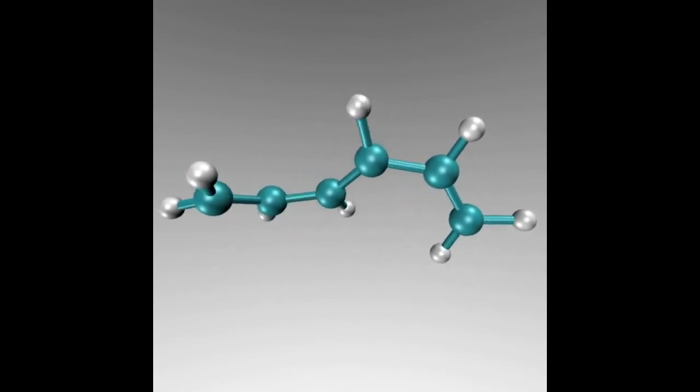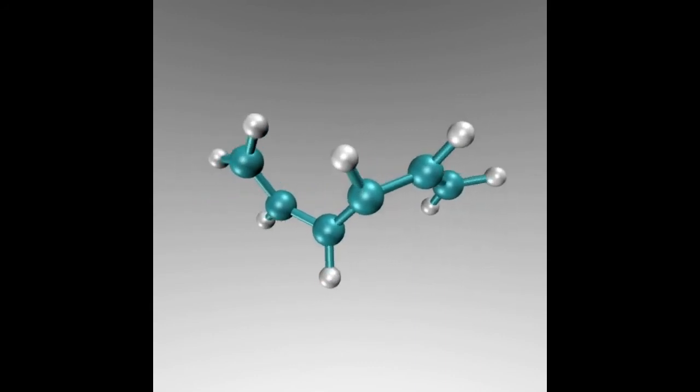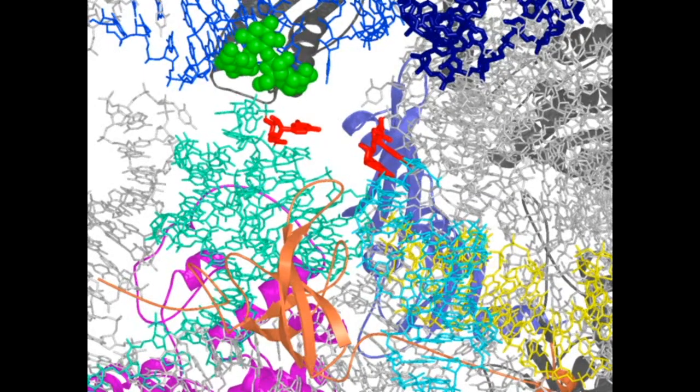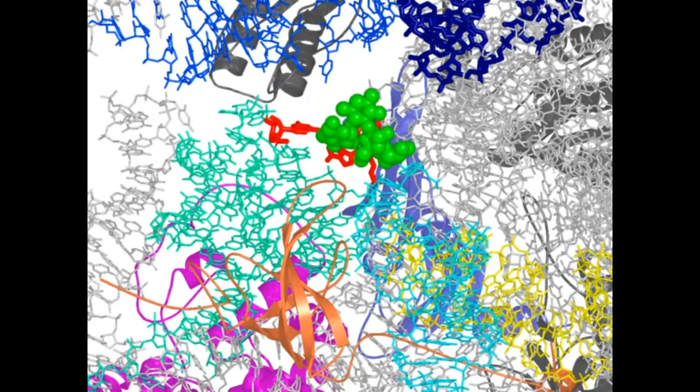Here we see a cyclic conjugated ring undergoing a ring opening reaction and straightening out into a linear molecule. And here we see the whole structure of a protein change slightly as an outside molecule approaches.